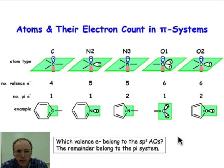Now we're ready to start considering heteroaromatic systems, systems that contain nitrogen, oxygen, and sulfur. The first thing that we want to do is to be able to count the number of pi electrons that that atom contributes to the pi system.